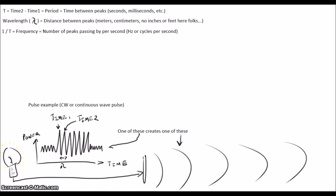If we take the inverse of the period, we get the frequency or the number of peaks passing by per second. One peak per second would have a period of one second and a frequency of one hertz or one cycle per second. The wavelength in this situation would equal the speed of sound in water divided by the frequency.